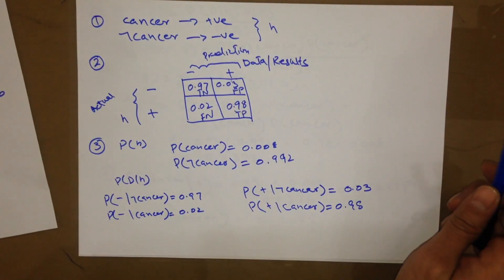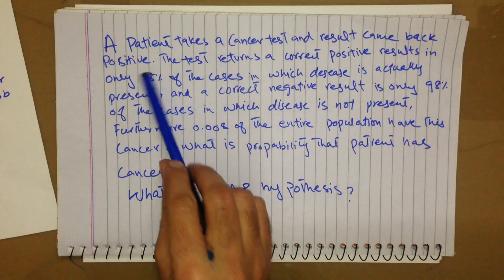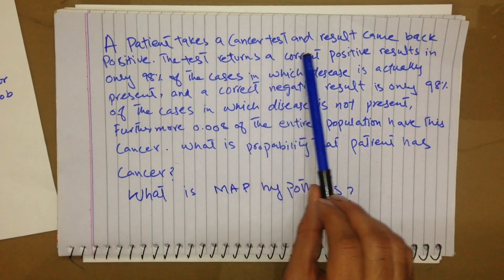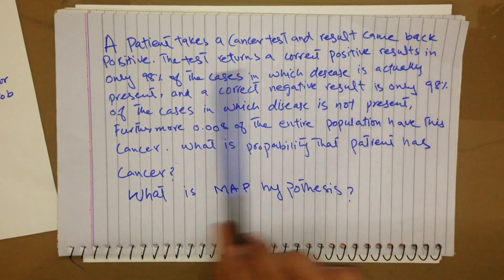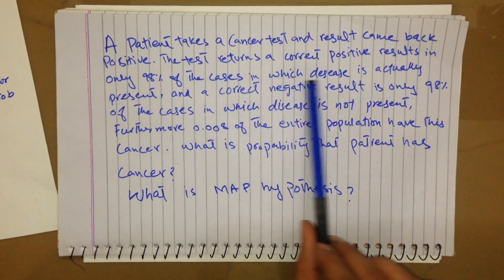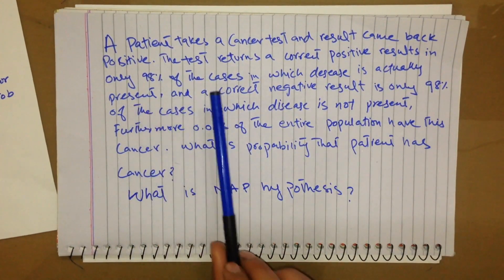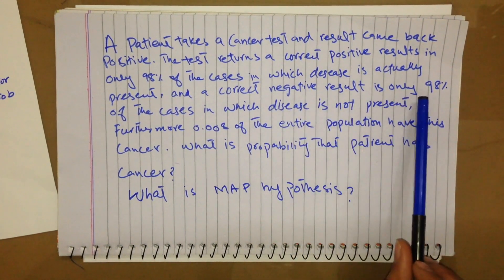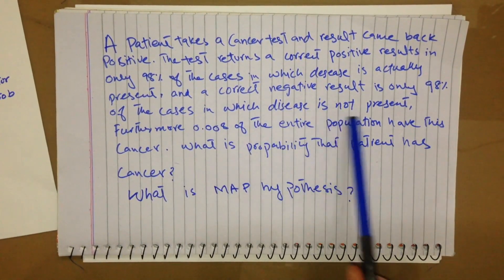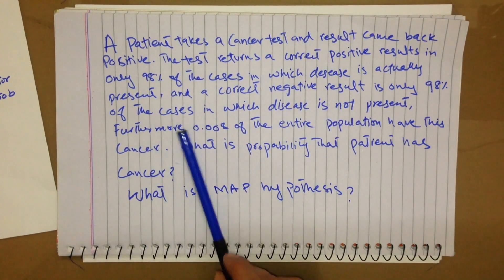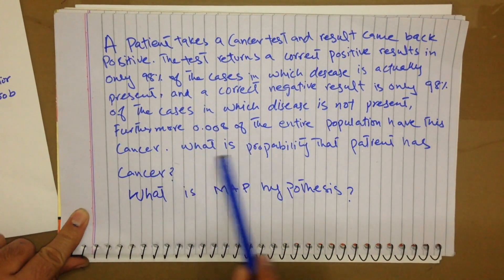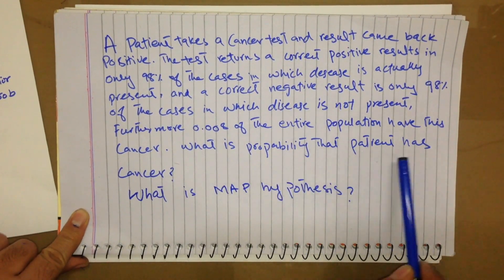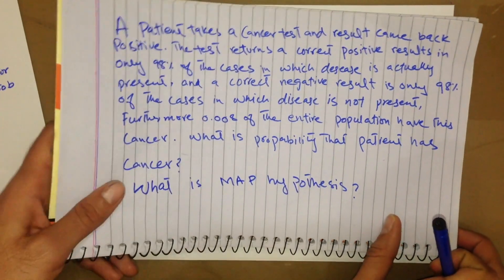We have seen a question: a patient takes a cancer test and the result came back positive. The test returns the correct positive result in 98% of the cases in which the disease is actually present, and a correct negative result in 97% of the cases in which the disease is not present. Furthermore, 0.008 of the entire population has this cancer. So what is the probability that the patient has cancer?